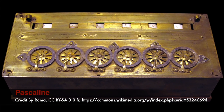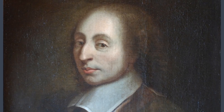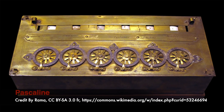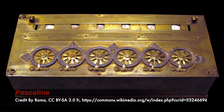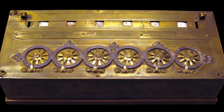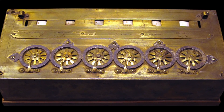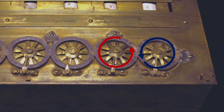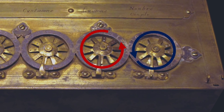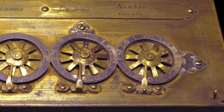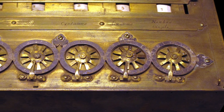Then in 1642, the Pascaline came in. It was invented by Blaise Pascal, who was led to develop a calculator because of the laborious arithmetical calculations required by his father's work as a supervisor of taxes. He designed the machine to add and subtract two numbers directly, and to perform multiplication and division through repeated addition or subtraction. The Pascaline was especially successful in the design of its carry-forward mechanism, which adds 1 to 9 on one dial and when it changes from 9 to 0 carries 1 to the next dial. Though this was a genius design, it was not very successful and was expensive as well.